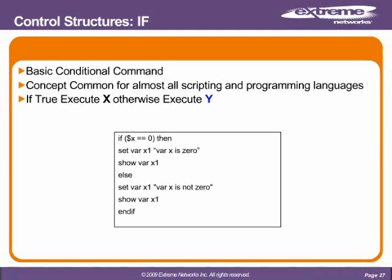Here we go deeper into if. It's a basic conditional command, and this if structure is conceptually true for almost all scripting and programming languages: if true execute x, otherwise execute y. In the example, line one — if the variable x is equal to zero, then we set var x1 to 'var is zero' and show it. Else, set var to 'var is not zero' and show it. So if x is zero, we execute the set variable command and give it a value of 'var is zero'; if it is not true, we set var x to 'is not zero', then end our if.